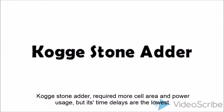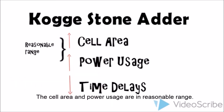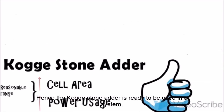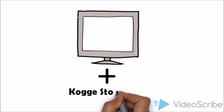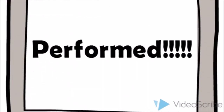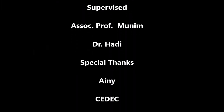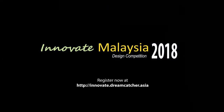The Cogstone Adder requires more cell area and power usage, but its time delays are the lowest. The cell area and power usage are in a reasonable range. Hence, the Cogstone Adder is ready to be used in a system and is ready to run.